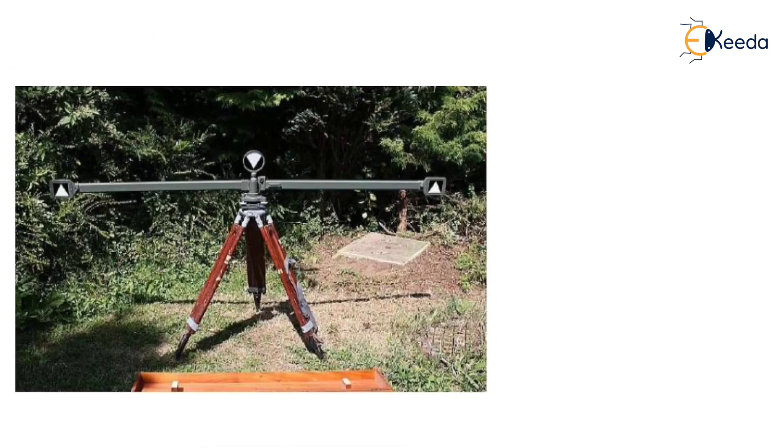As over here in the figure you can see, suppose we have to calculate the horizontal distance of this point which will be a station point. So what we will do is set up the subtense bar at this point, level it, center it properly.